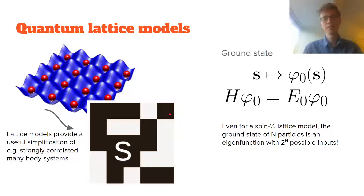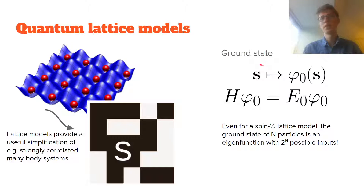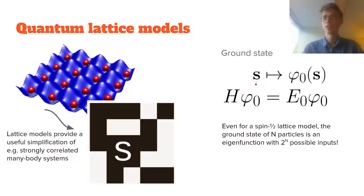Even for these simplified models, it can be quite difficult to find the low or zero temperature behavior. Because these spin configurations, even if each particle only has spin up or spin down, can have 2^n different possible configurations if n is the number of particles. So the ground state is a mapping from each spin configuration to a complex number, with 2^n different possible inputs.